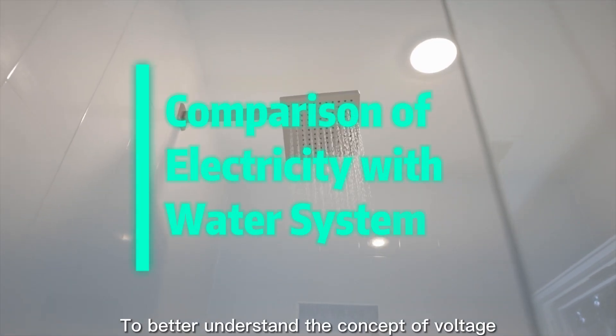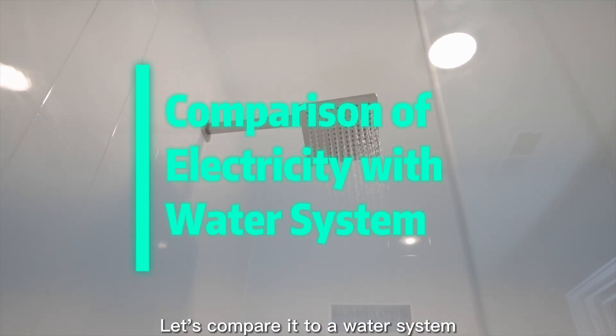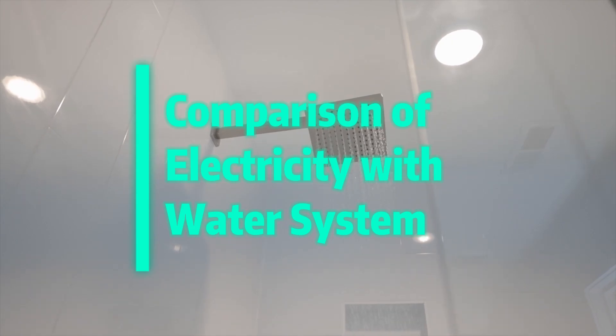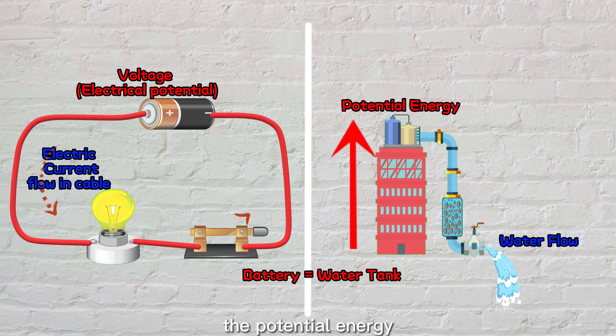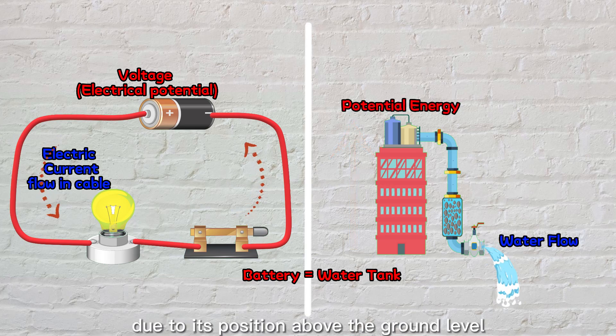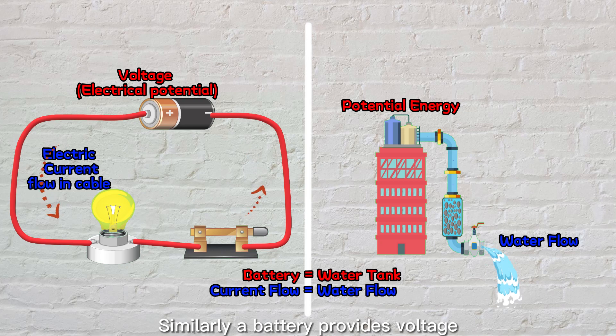To better understand the concept of voltage, current, and resistance, let's compare it to a water system. Just like a water tank placed on the roof, the potential energy due to its position above the ground level allows water to flow through the pipes. Similarly, a battery provides voltage or electrical potential energy that drives electric current to flow through the cable.